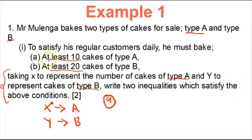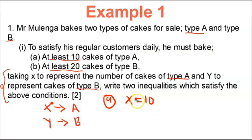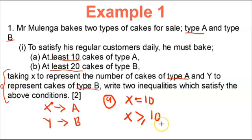For the first inequality: 'I must bake at least 10 cakes of type A.' Type A is represented by letter X, so X equals 10 as an equation. But we need to write the inequality using the symbol. They have said 'at least,' and the inequality symbol for at least is greater than or equal to. So our first inequality is X ≥ 10.